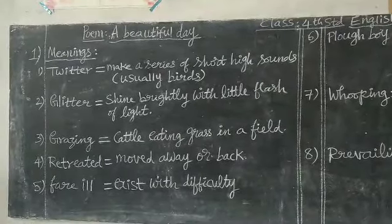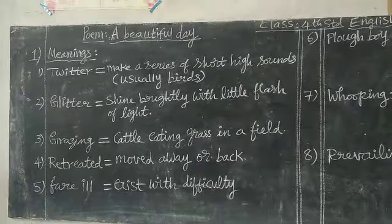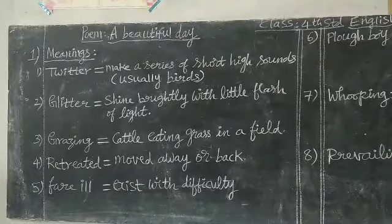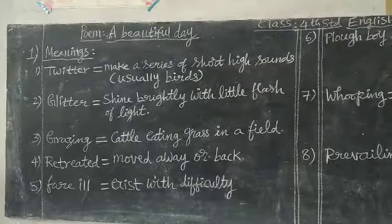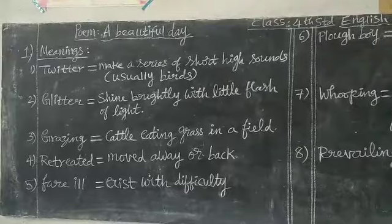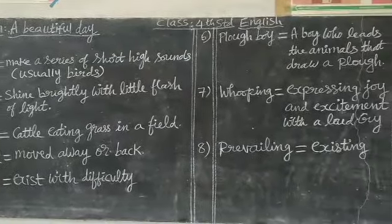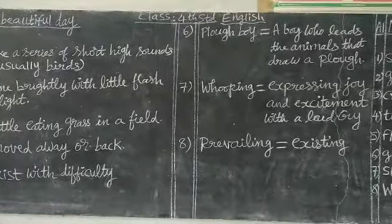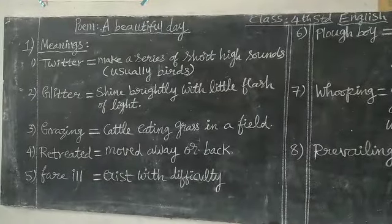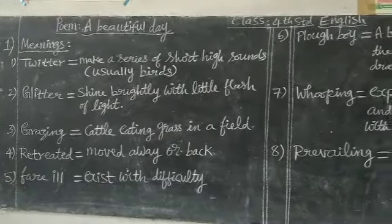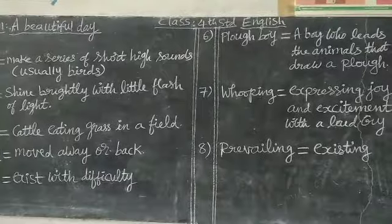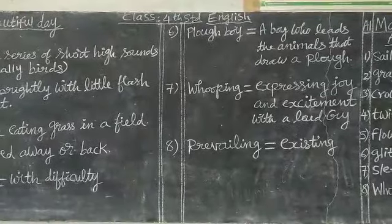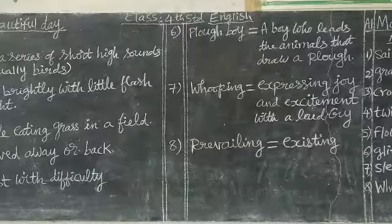Everything I have written is also there in the reader on page numbers 10 and 11. In these two pages you will find all these meanings. There are eight meanings in total — five on this side and three on the other: twitter, glitter, grazing, retreated, fair, ill, plow boy, whooping, and the eighth one is prevailing. All these meanings you have to write neatly in the classwork.